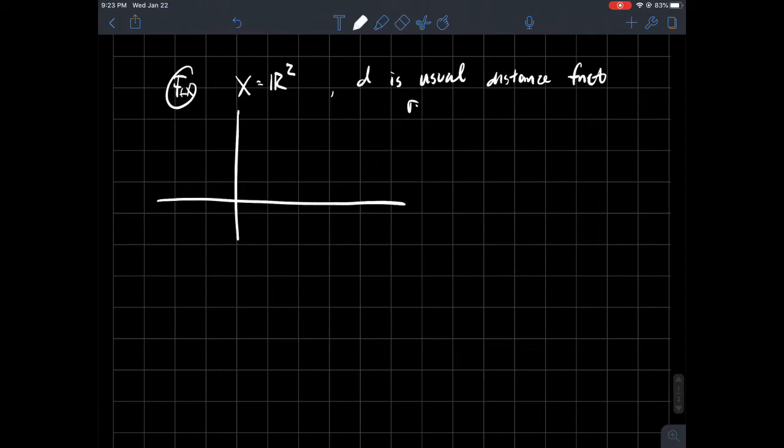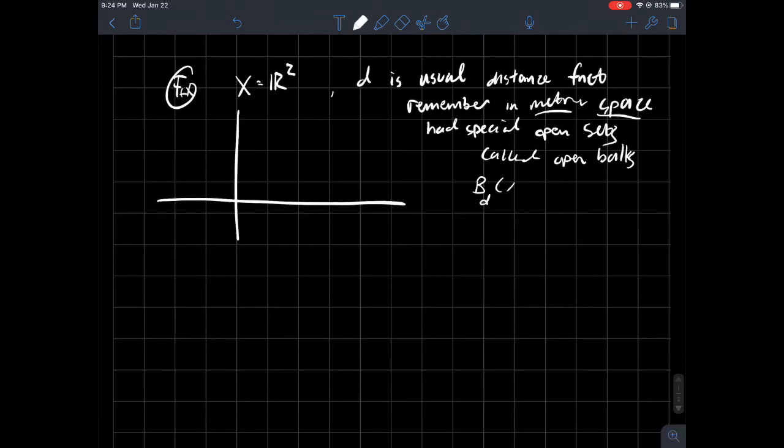So I'm going to draw you a picture now. Remember in a metric space we had this concept of what an open ball is. So in a metric space we had these special open sets called open balls. And just to remind you, if you had a particular point X that's in your set, and we use this notation B_D(X, epsilon), where epsilon represents the radius of your ball and this was the center. It's been a while since you thought of that.